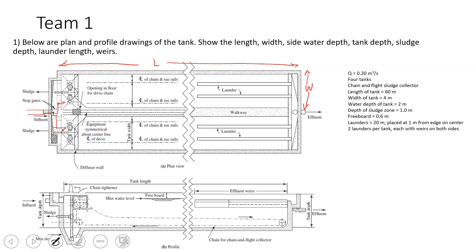The launder is labeled — you can see it here at 20 meters. We have weirs on both sides so effluent flows from both sides of the tank into the launder. The freeboard is shown here. Freeboard is simply — think about a swimming pool. You don't have the water level right up to the top. You have some space so that water isn't splashing out onto the deck. Same thing here: we want to make sure water isn't flowing over the top of the tank onto the surrounding ground.